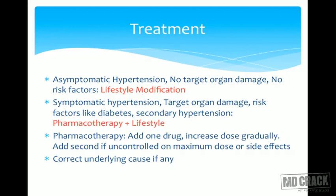Asymptomatic hypertensives without target organ damage do not need drug therapy; lifestyle modification with dietary changes, reduced salt content, and increased physical activity are required. For symptomatic hypertension or hypertension with target organ damage such as retinopathy or ECG changes, pharmacotherapy is started. The principle is to add one drug, increase the dose gradually, and add a second drug only if hypertension is uncontrolled on the first drug or intolerable side effects occur.